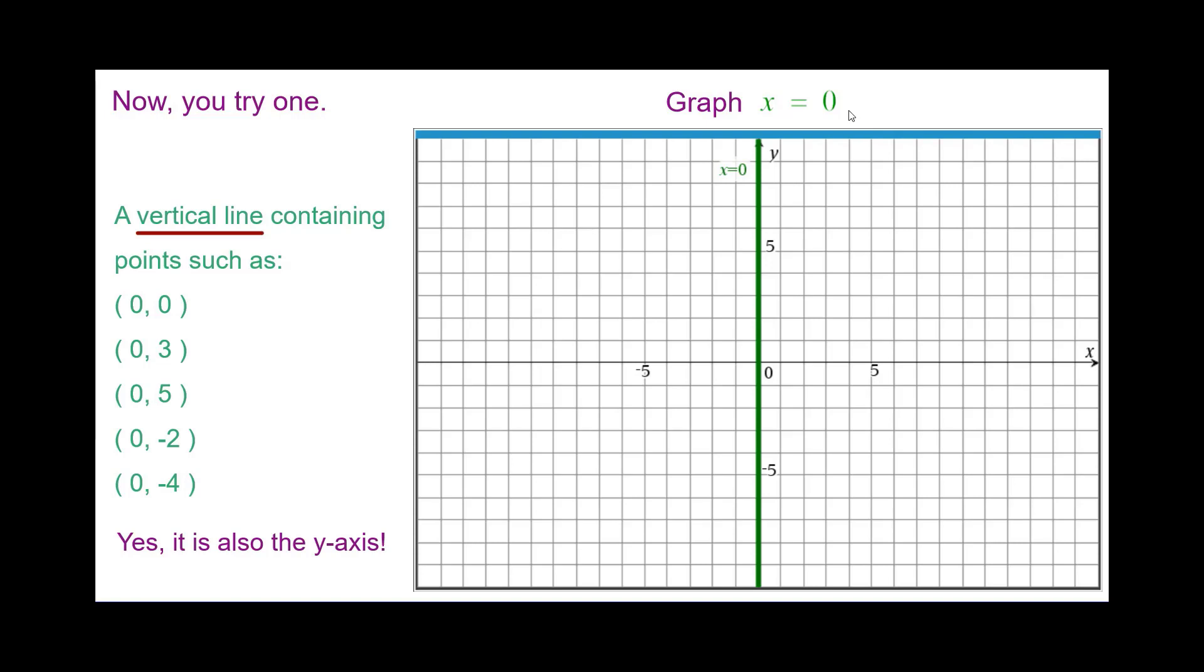The graph of x equals 0 is a vertical line containing such points as these, and yes, it is also the y-axis. The equation of the y-axis is x equals 0, and that's a good thing to know.